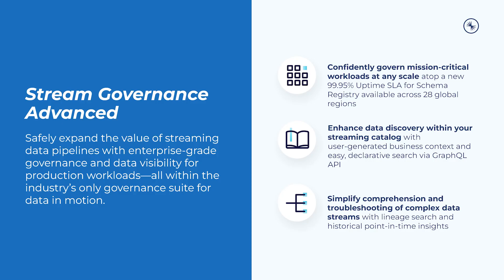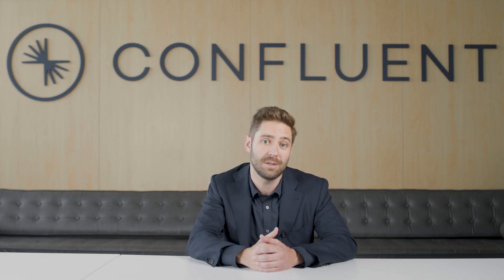Stream Governance Advanced also introduces GraphQL API support, the same API the Stream Catalog UI is built on. Available alongside an existing REST API option, the GraphQL API gives users a simple declarative method to get the exact data they need, enabling a better understanding of data relationships on the platform.